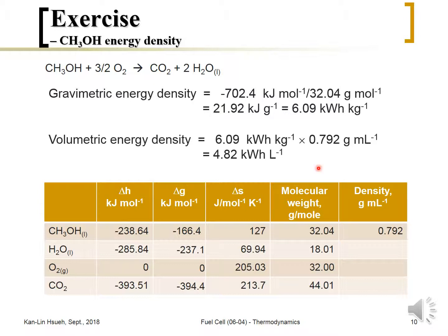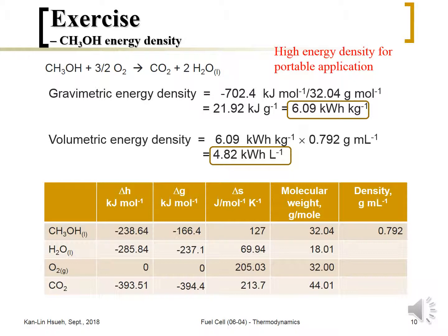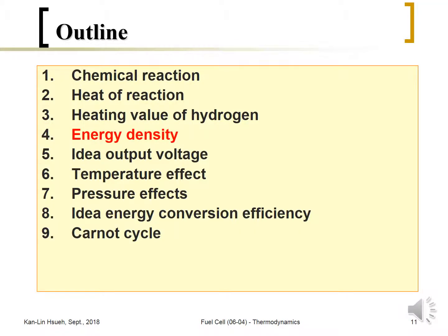Here the density is given in grams per milliliter, so you multiply by 1000 to convert to kilograms per liter for the calculation. You can see that the energy density of methanol — both gravimetric and volumetric — is pretty high at ambient temperature and pressure. That is why methanol is a good choice for portable applications: it has reasonably high energy density. In the next section we will talk about how to calculate the ideal cell voltage of a fuel cell based on thermodynamic principles.